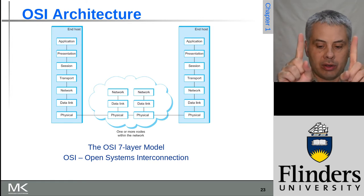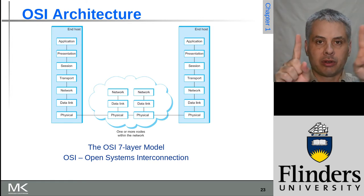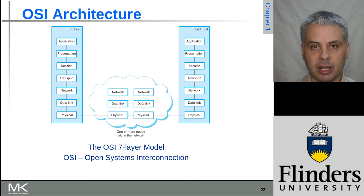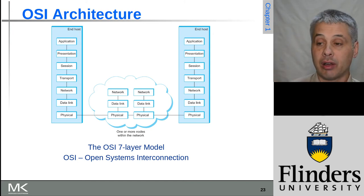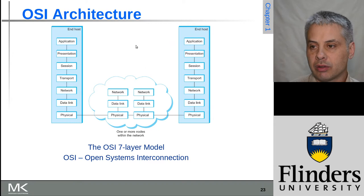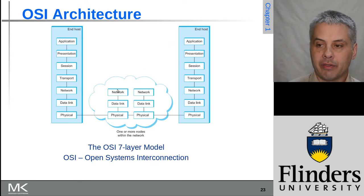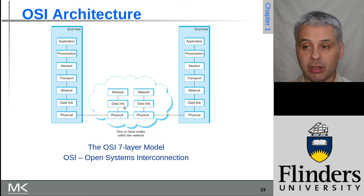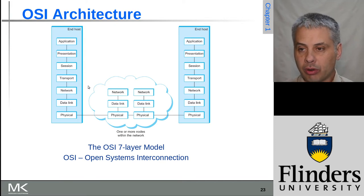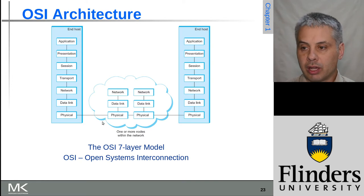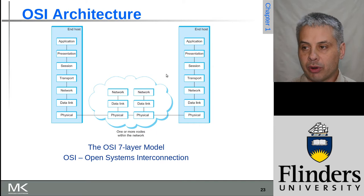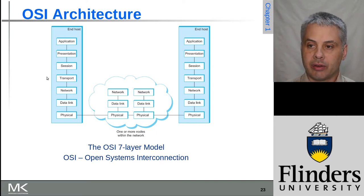Then at the network layer we have the ability to move data not just end-to-end on a single link, but through indirect connections. As shown on the slide, we have that central section going through the cloud, through the internet, with these three layers. For network switches and similar devices, that's all that actually needs to be implemented — these bottom three layers of OSI form the host-to-host protocol section.